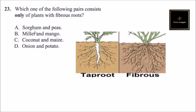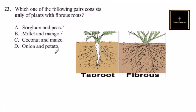Looking at option A: sorghum has a fibrous root system, but pea does not — it has a tap root system. Looking at option B: millet has a fibrous root system, but mango has a tap root system.